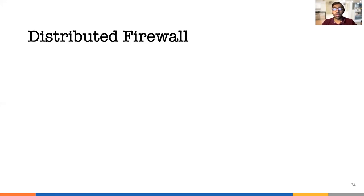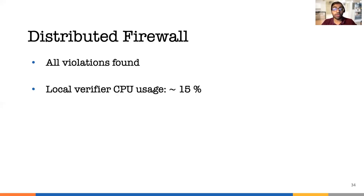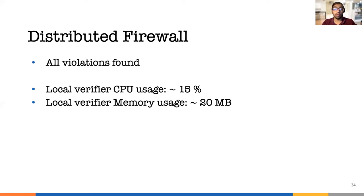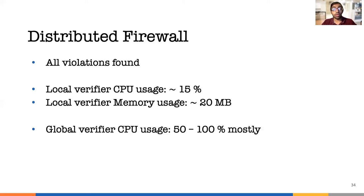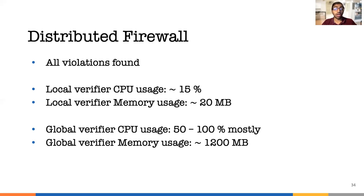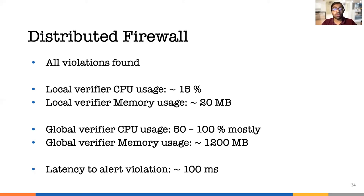For the firewall experiments, I present a summary of results. We were able to catch all the violations. The CPU usage at the local verifier was 15% and local memory usage was only 20 megabytes. At the global verifier, the CPU usage was mostly between 50 and 100% and memory usage was around 1,200 megabytes. The CPU usage is higher at the global verifier as it collects events from all local verifiers, and the memory usage is high due to state saved for fault tolerance and scalability. The latency between when a violation occurred and the alert was raised was around 100 milliseconds.